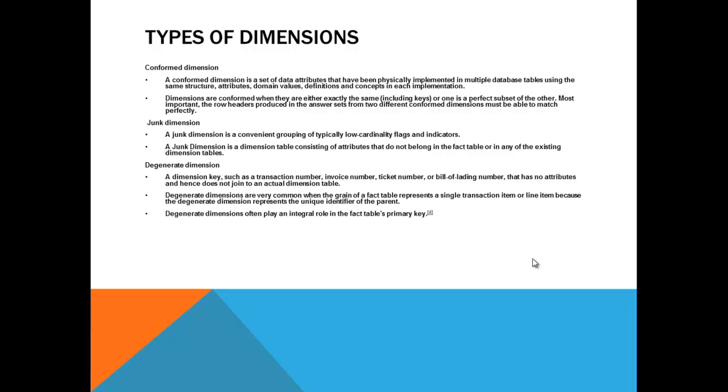That is degenerated dimension. It plays the integral role in the fact tables primarily because when you say an order is processed, it is not just the order. The order has 100 visiting cards along with 10 flyers and 10 more mugs that is being raised by an office. Sometimes when you put the same order in Amazon, they will say items can be shipped separately. The reason is not every item is manufactured by the same manufacturer.